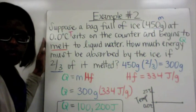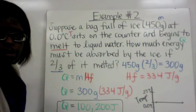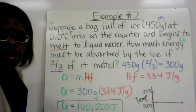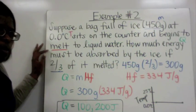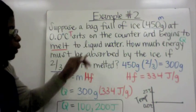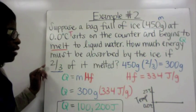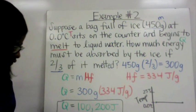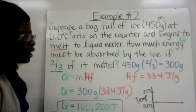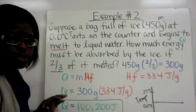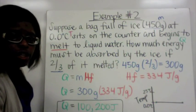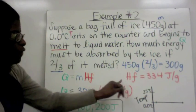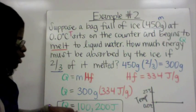Example 2: Suppose a bag of ice — 450 grams (marked in blue) — at 0°C (marked in red) sits on the counter and begins to melt. Since it melts, we use heat of fusion. How much energy must be absorbed if two-thirds of it melted? We multiply 450 grams × 2/3 = 300 grams. Q = 300 g × 334 J/g = 100,200 joules.